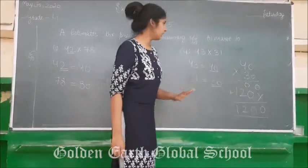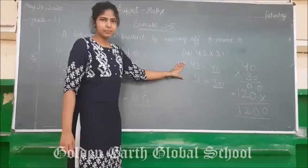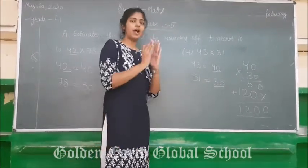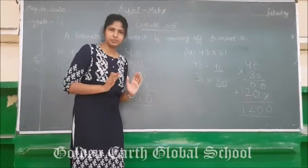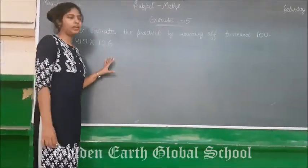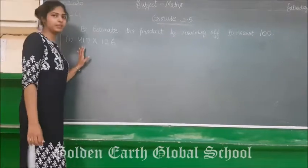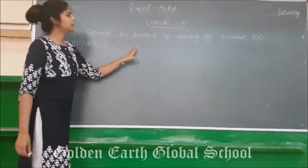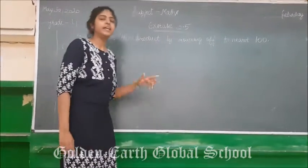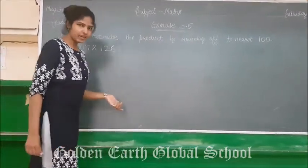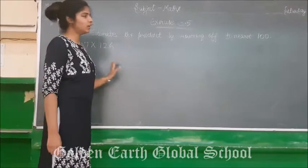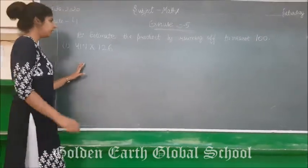This is the simple concept: just write the number to its nearest 10, then multiply those two numbers. Clear everyone? Now we will do part D: estimate the product by rounding off to nearest 100. In the previous part we solved by nearest 10; in this question, you have to round off to nearest 100.